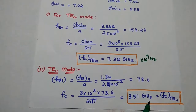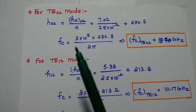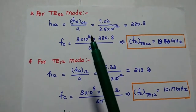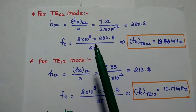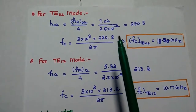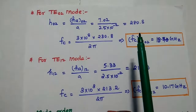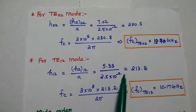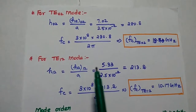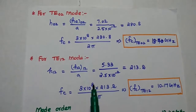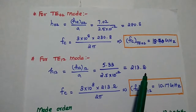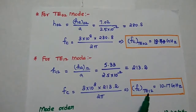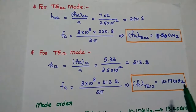Do you all understand this one? Similarly, we can find out the values for TE02 and TE12 modes. For TE02, H'_02 = 7.02 divided by A = 2.5 × 10⁻², giving 280.8. Substituting in the cutoff frequency formula, the cutoff frequency for TE02 wave is 10.17 GHz.